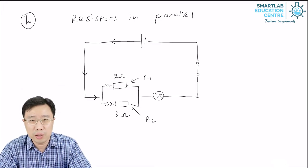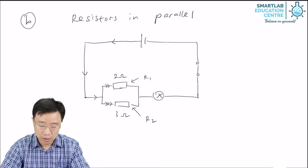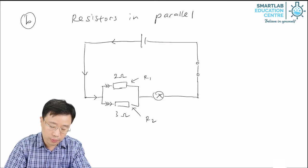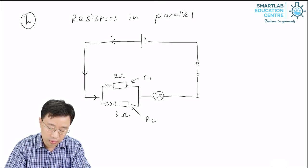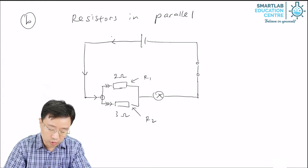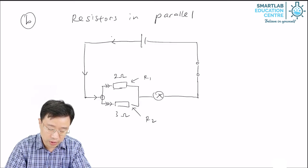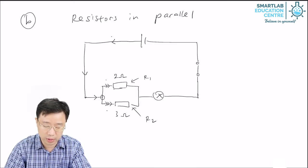Looking at the diagram, looking at the arrows representing the current, you can see that the current flowing out from the electric cell, when it comes to this junction, there are two paths for the current to flow. So the current splits up into two currents.